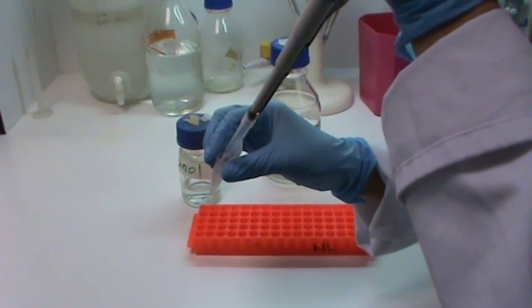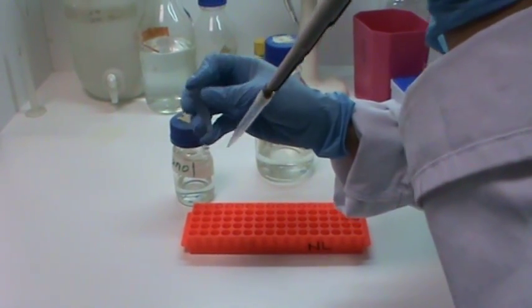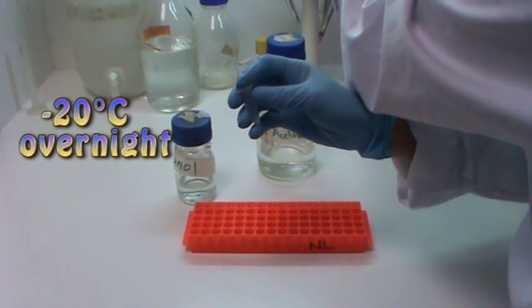I will then place the microfuge tube in the freezer overnight, which is at minus 20 degrees Celsius. This will help in the precipitation of the DNA.